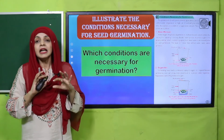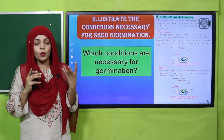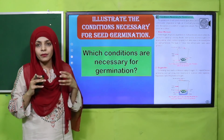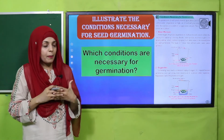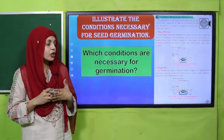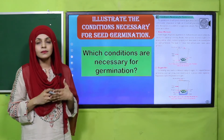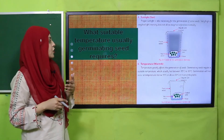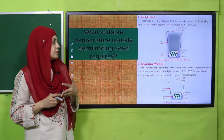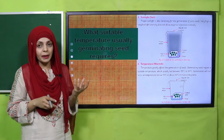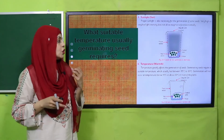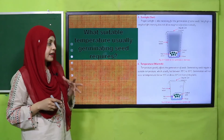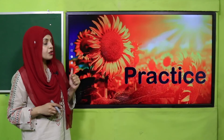In the next lecture we illustrated the conditions necessary for seed germination. Different conditions ki requirement hoti hai ek seed ko germinate karane ke liye — jaise ke water, oxygen, aur warmth. Which conditions are necessary for germination? Very good, excellent. What suitable temperature do germinating seeds require? They need warm temperature — warmth chahiye hoti hai taake quickly germinate kar sakein. The temperature is usually between 15 to 30 degrees centigrade.